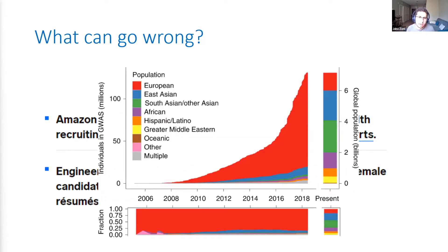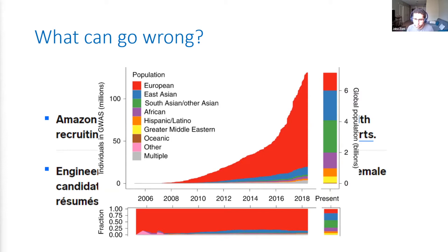Another niche example arises with genetic data. Many percent of the genetic data we have comes from European sources, and this data is used to try to predict the prevalence of diseases and find the right treatments. If you use this kind of data to make important medical decisions, you're overfitting these decisions to the European population without thinking about how they're going to affect other populations. You can't expect that anything trained on this data will lead to viable predictions applied to other populations.